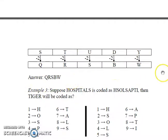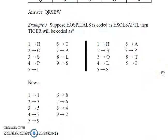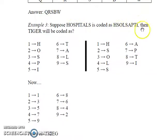In the next example, the word HOSPITALS is coded as HSOLSAPTI. What is the coded word for TIGER? Let's look at the place value of the letters in this word HOSPITALS. In the first position we have H, in the second position we have O, and in the third we have S, and so on.